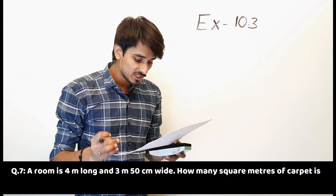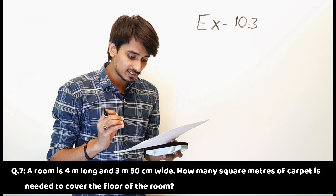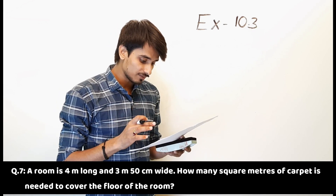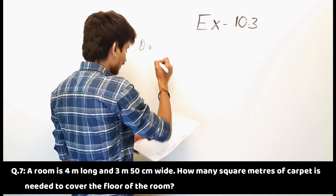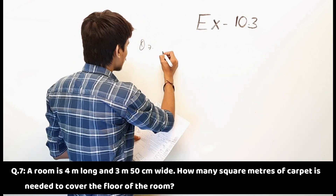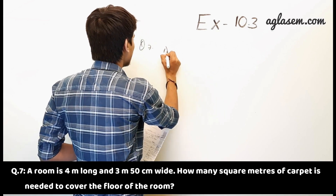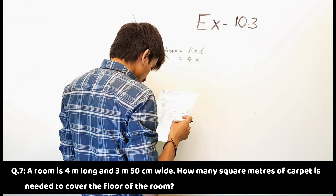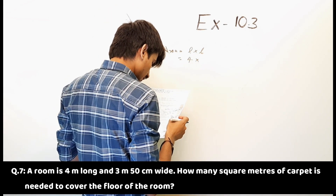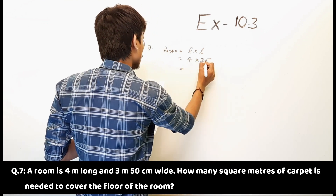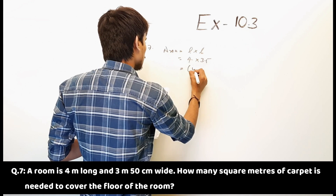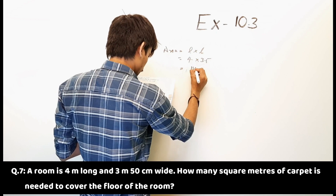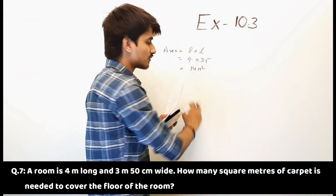Seventh question: a room is 4 meter long and 3 meter 50 cm wide. How many square meters of carpet is needed to cover the floor of the room? Area is equal to 4 multiplied by 3.5 is equal to 14 meter square. So the answer is 14 meter square.